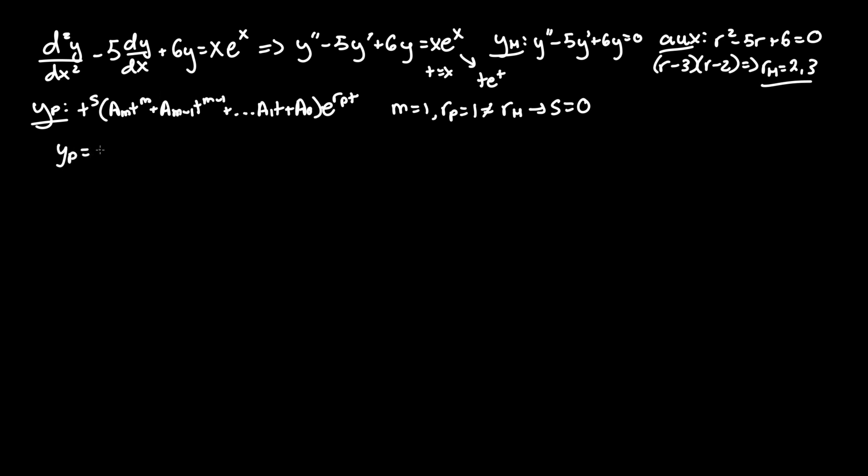Now setting the equation yp equal to t to the 0 times a sub 1t plus a sub 0 since we only go up to a power of 1t times e to the 1t. So just e to the t. Don't let s equaling 0 affect anything. Rewriting, we have y particular equals at plus b times e to the t. I'm changing a sub 1 to a and a sub 0 to b for simplicity. Now we have to find y particular double prime, single prime, and normal. We got to take two more derivatives and then set that equal to t e to the t.